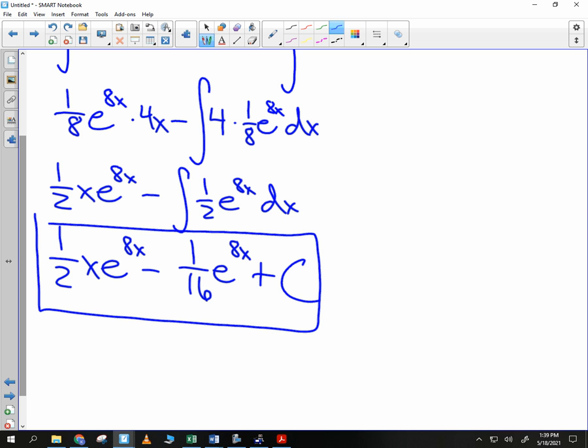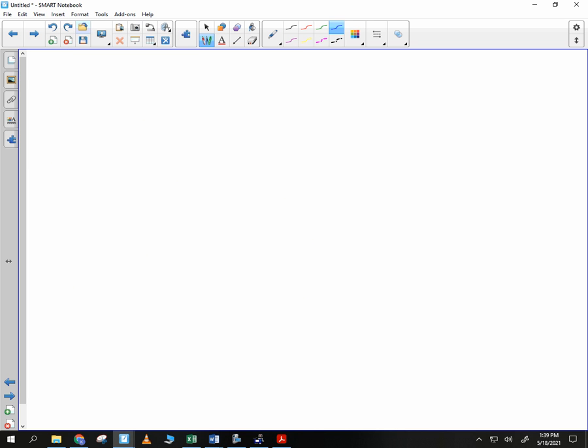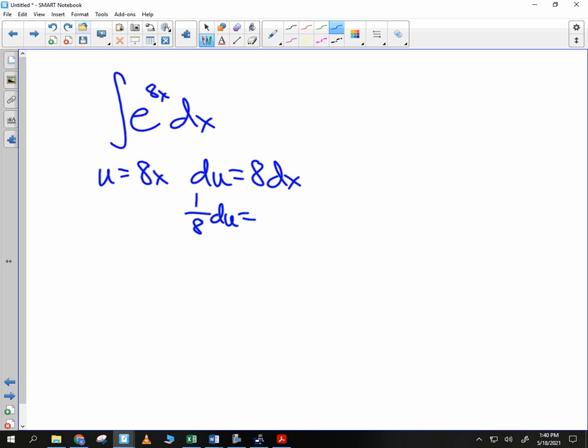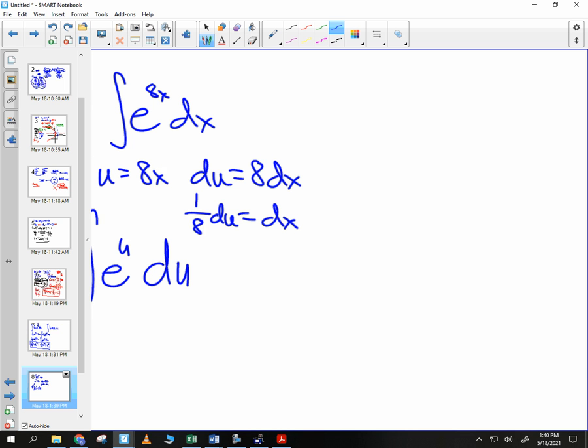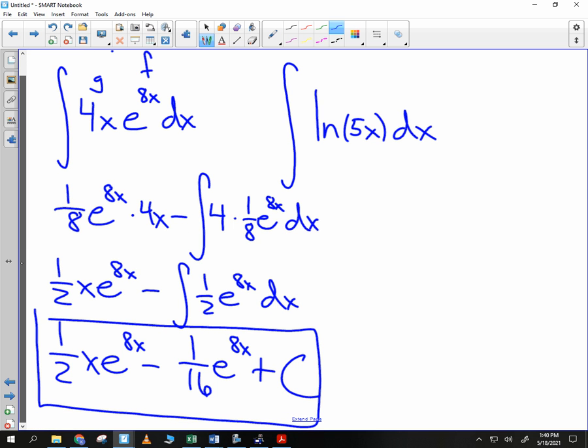Question? So the antiderivative of e to the 8x, you have to use substitution. And you can see that when you divide by 8, you get 1/8 du is equal to dx. So now you have 1/8 integral du, and you have e to the u left over. So some of the problems you were given were pretty straightforward. They didn't involve any substitution. You need to be able to recognize when you're requiring substitution. Let's try this last one here, and then you'll do two more and we'll be done for the day.